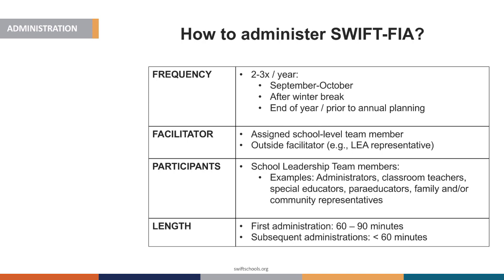The first administration of SWIFT FIA typically takes an hour to an hour and a half. There are 22 items, but it takes time for teams to understand the item, the item components, and how to score and interpret based on the stages of implementation. However, subsequent administrations take less than an hour, because teams have a general understanding of the FIA and have started to prioritize goals — some items they may make progress on and others they've chosen not to address at this time.